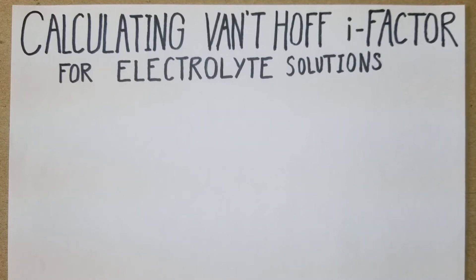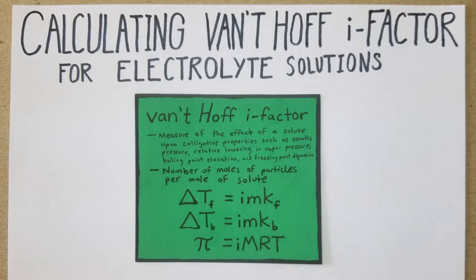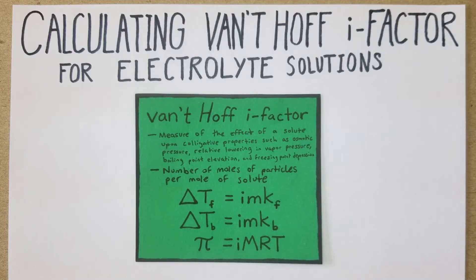How's it going guys, in this video we're going to go over the calculation of van't Hoff i-factor for electrolyte solutions. Basically, here is the full definition: it's the measure of the effect of a solute upon colligative properties such as osmotic pressure, relative lowering of vapor pressure, boiling point elevation, and freezing point depression.